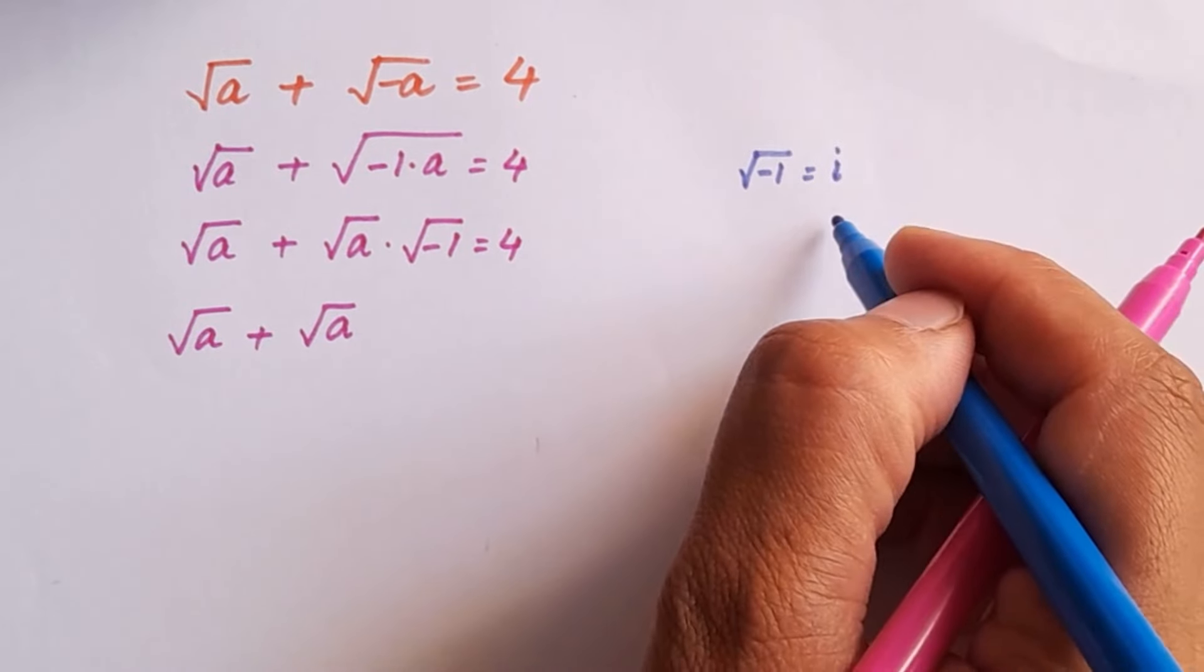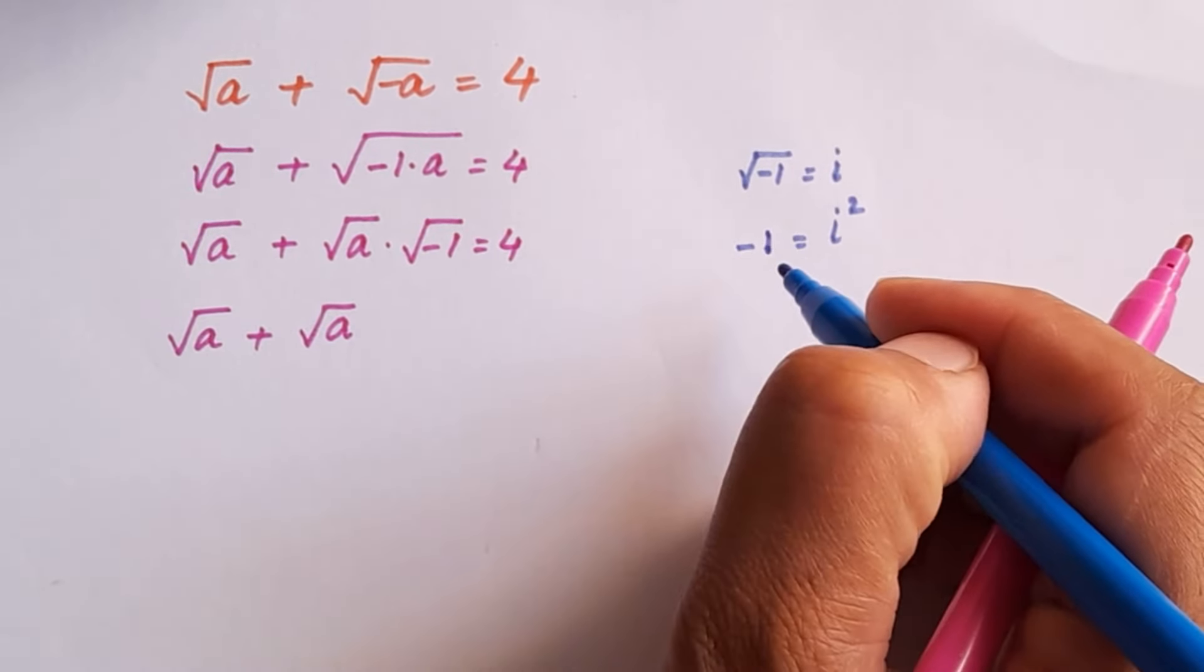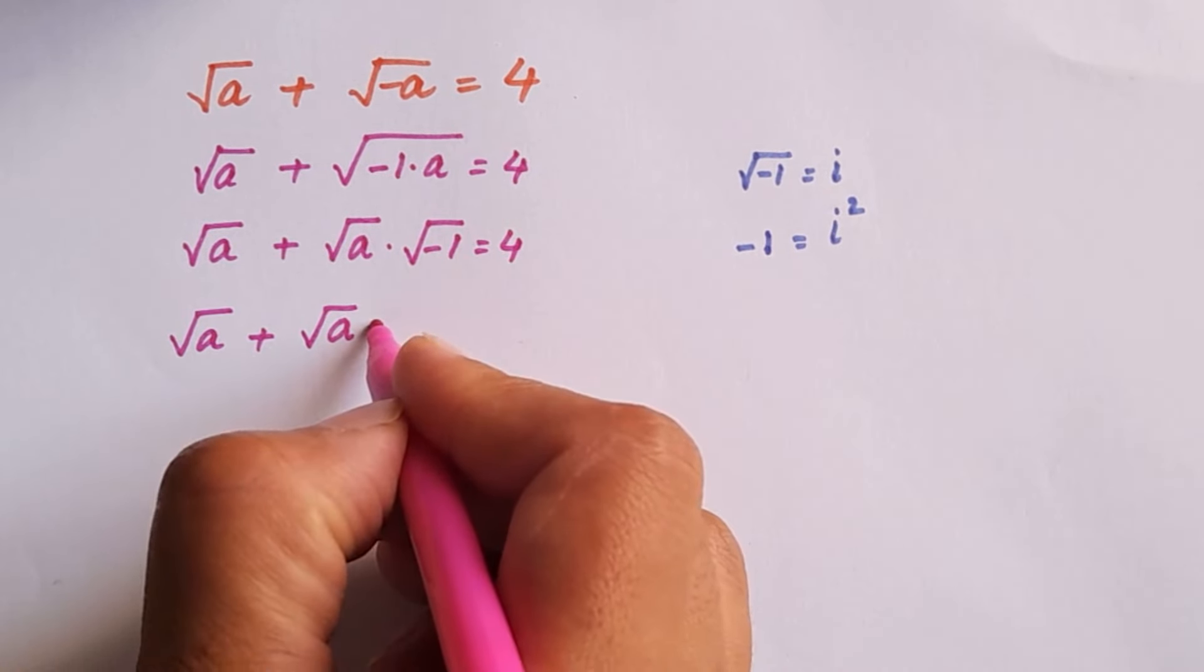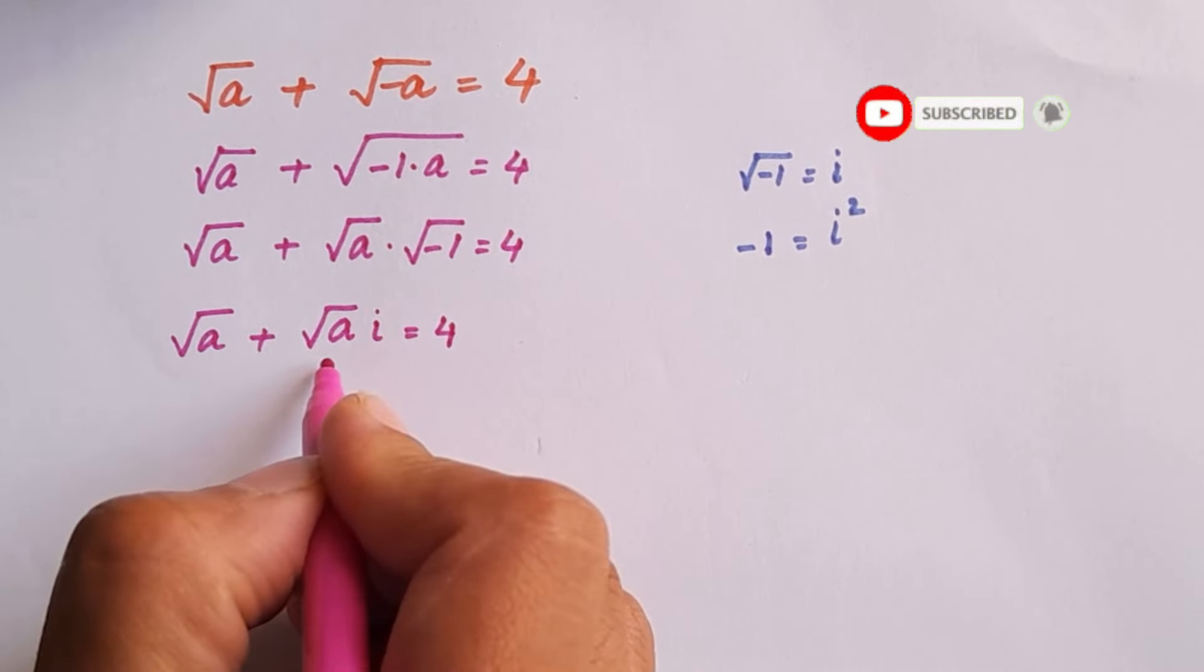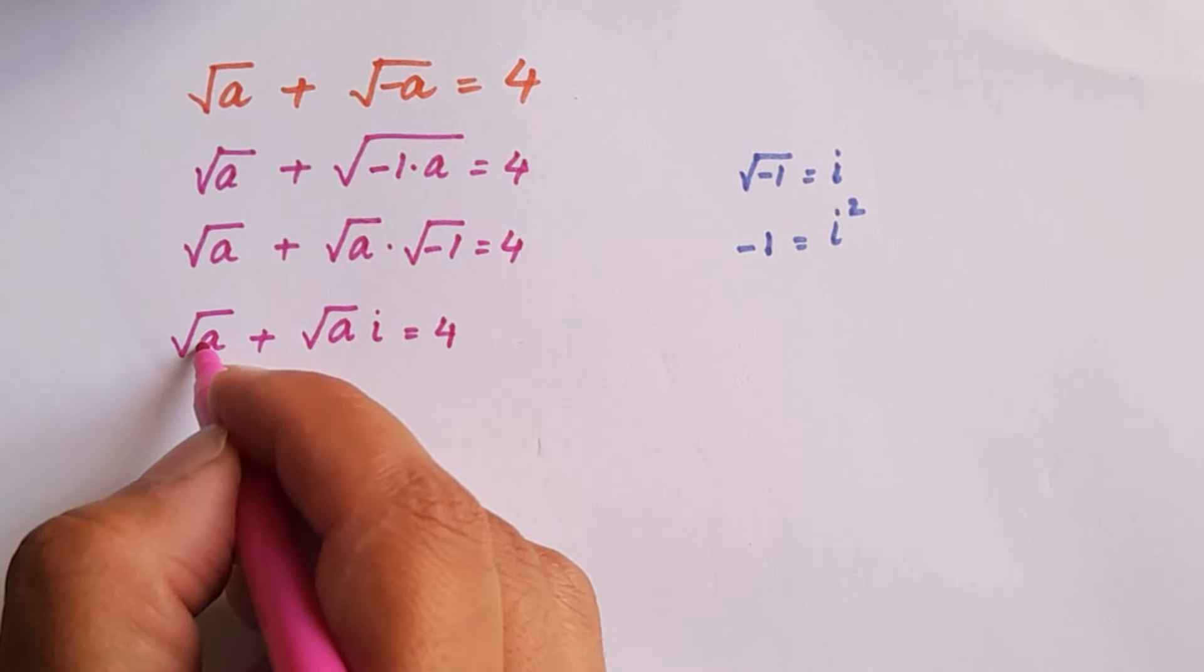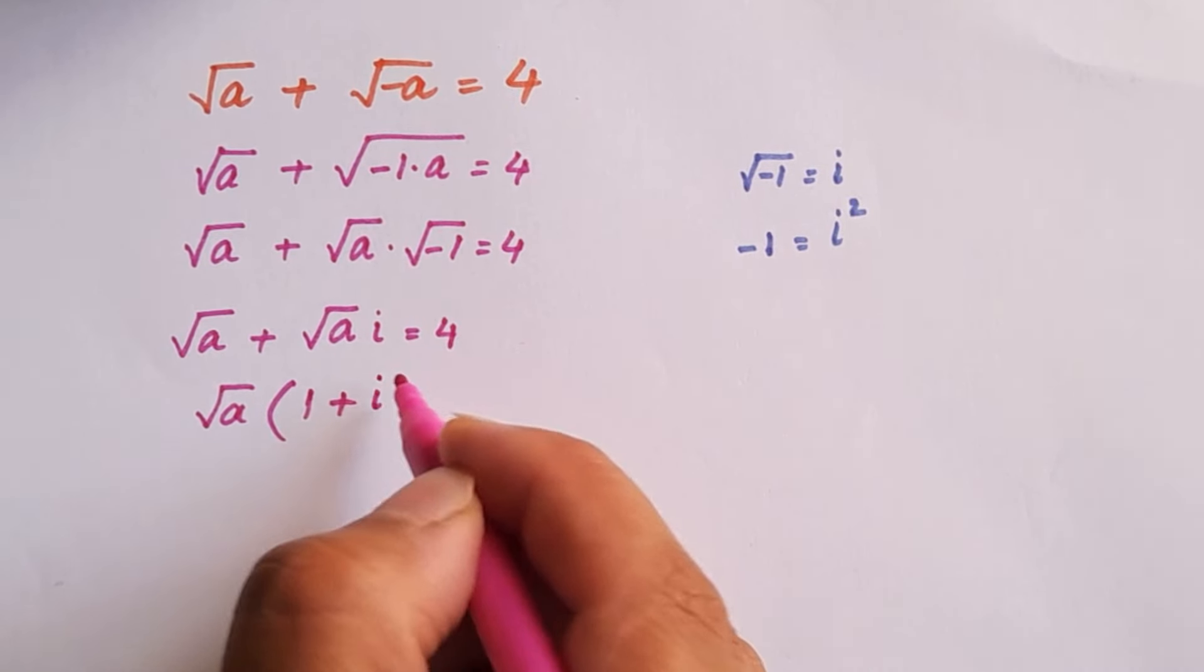Similarly we can say that iota square is equal to negative 1. So replacing root negative 1 by iota here equals 4. If we take square root of a as common, so inside the bracket dividing root a by itself this will give us 1 and here we will get iota.